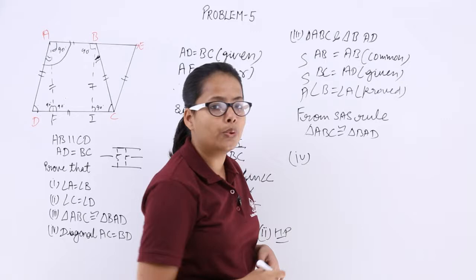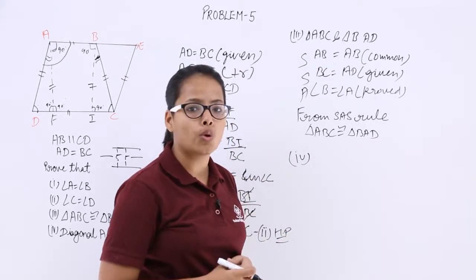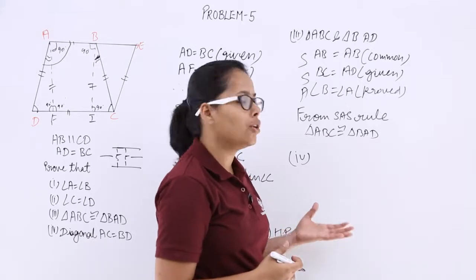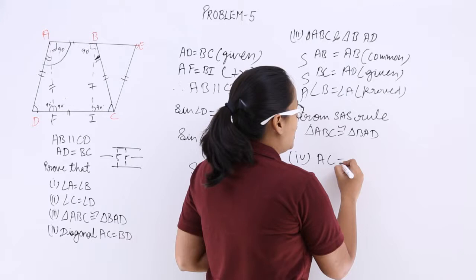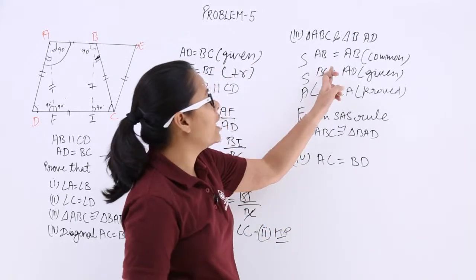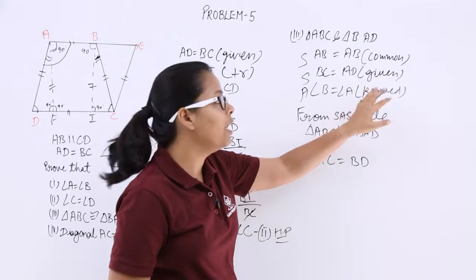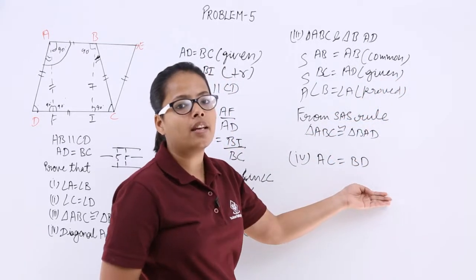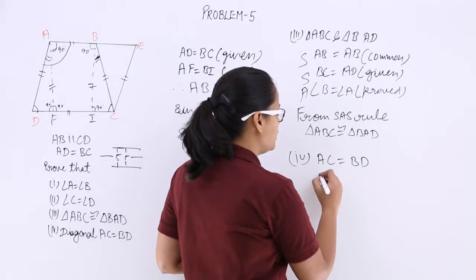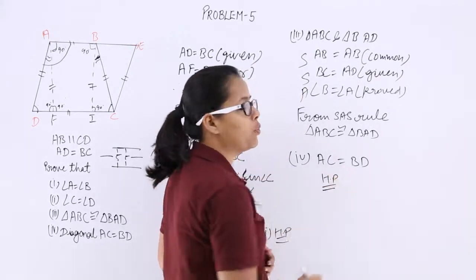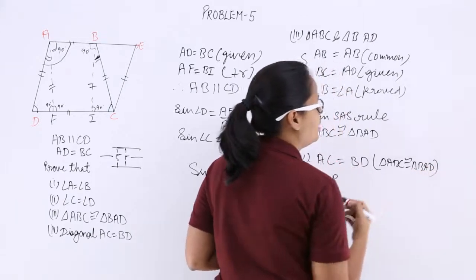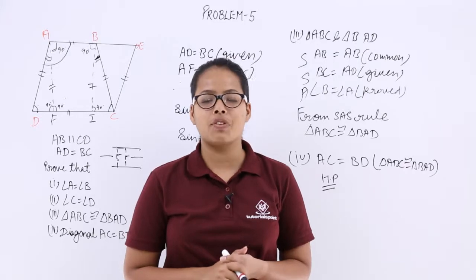For the fourth part, since these two triangles are congruent, they are similar in shape as well as size. AB equals AB (common branch), BC equals AD (given), so the third sides must be equal: AC equals BD. Hence proved — AC equals BD, because triangle ABC is congruent to triangle BAD. I will be taking more theorems in the next video lecture. Thank you.